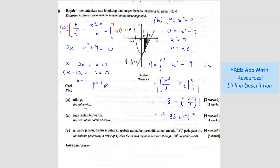Question C: find the volume generated in terms of pi when the shaded region is revolved through 180 degrees about the y-axis. There are two shaded regions. Rotating 180 degrees means only half a full circle, so later we divide the total volume by 2.